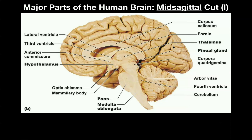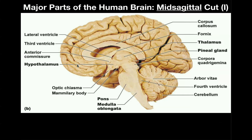The entire superior region of the brain where you see all these ridges and folds — remember that ridges are called gyri, and the small folds are called sulci, or singular sulcus. This entire region with all these gyri and sulci on the top of the brain is called the cerebrum.